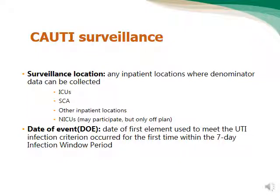If you want to do CAUTI surveillance in neonatal ICU, you should do it out of plan — not for national reporting or benchmarking — because for neonates it is rarely used. The date of event, similar to other device-associated infections, is the date of the first symptom or first diagnostic test. The diagnostic test here is the positive urine culture. You have a seven-day window, and the first symptom or positive urine culture is used as the date of event.